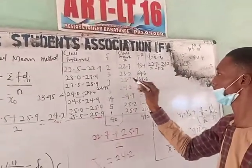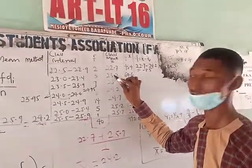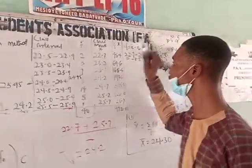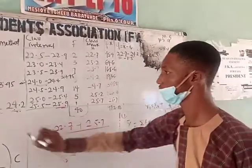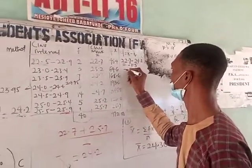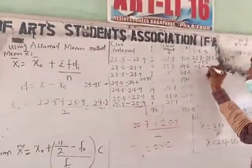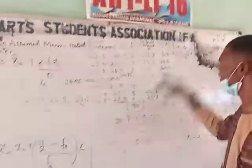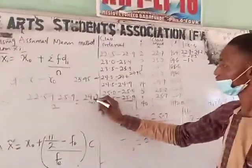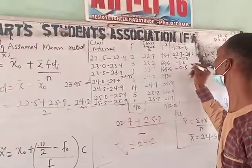So next one — what do you do next? 23.2 minus 24.2, so what is the answer? Minus 1.0. Next one, what do you have? 23.7 minus 24.2 gives minus 0.5.